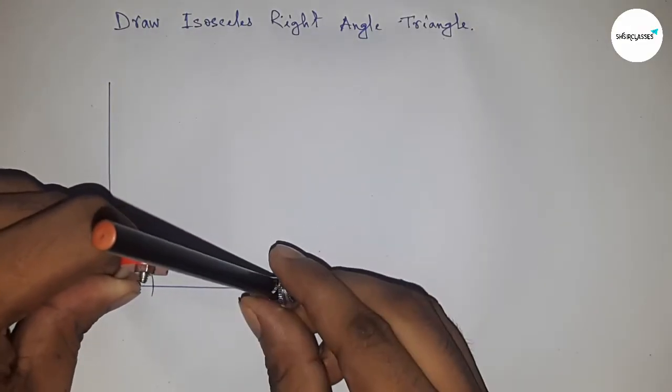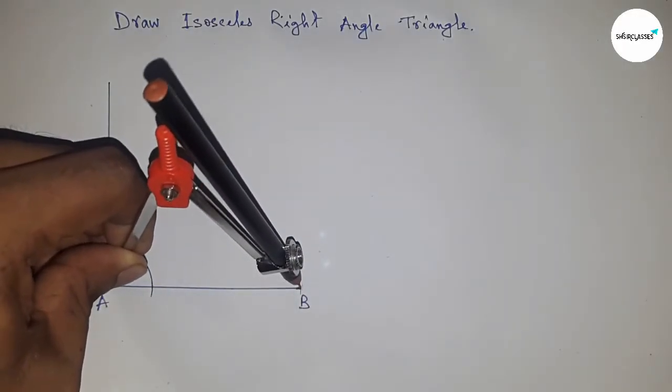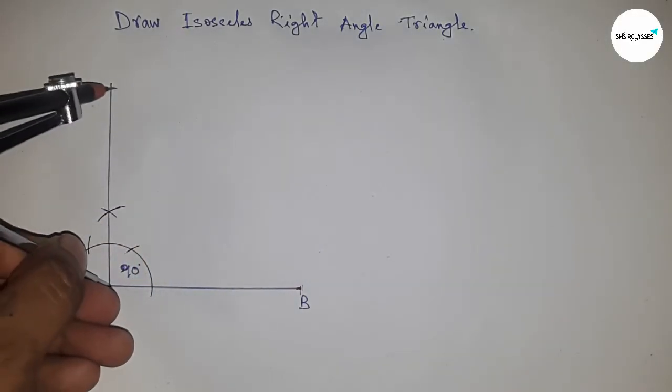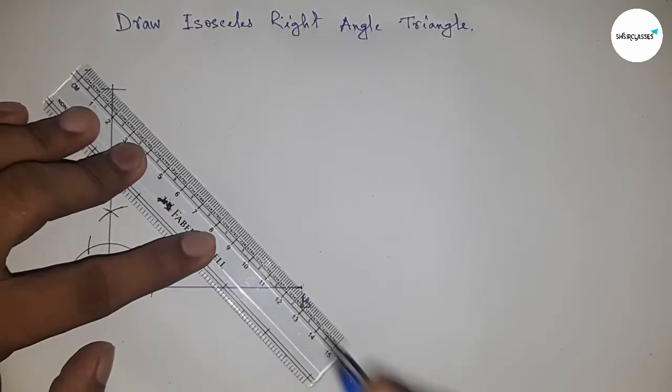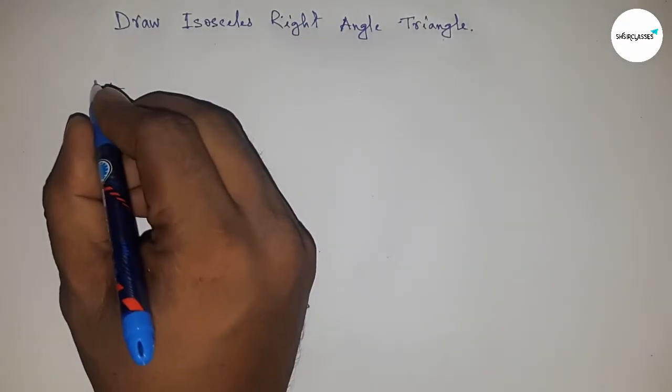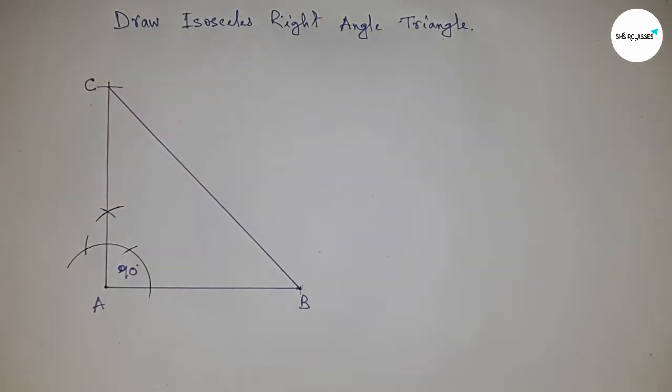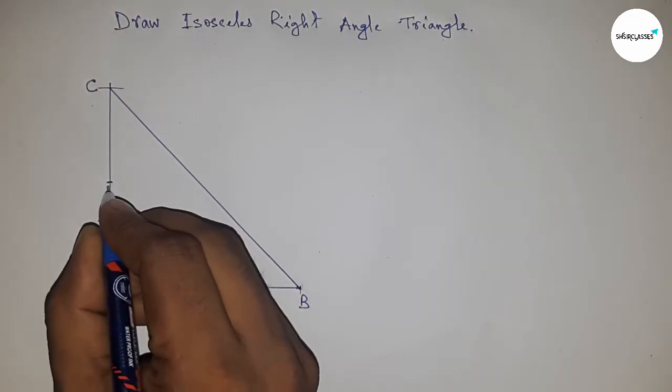Next taking the distance or length AB by compass and cut here. So now joining this. So this is C point and AB and AC are equal.